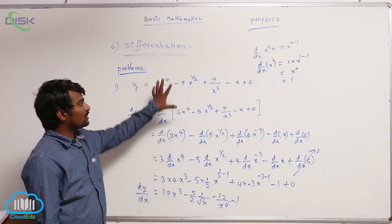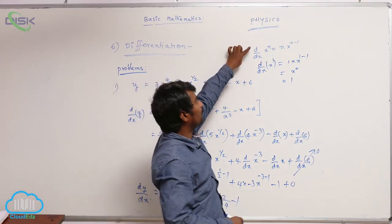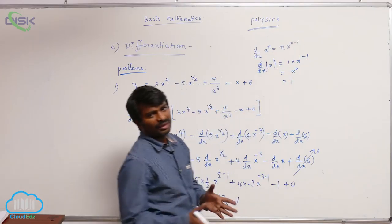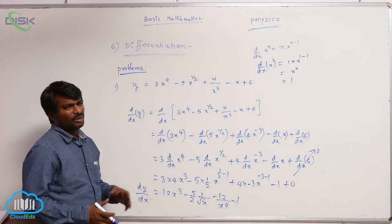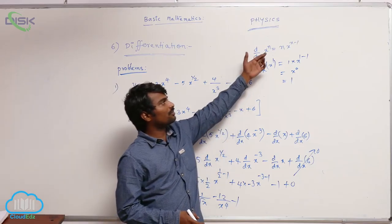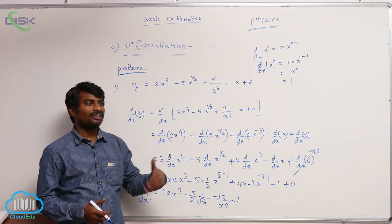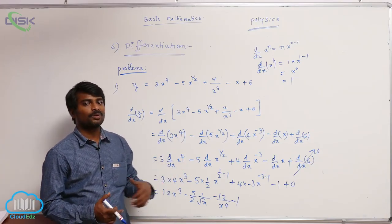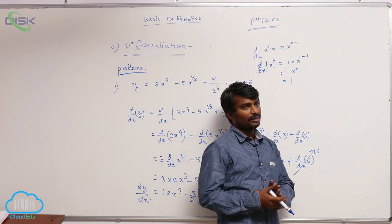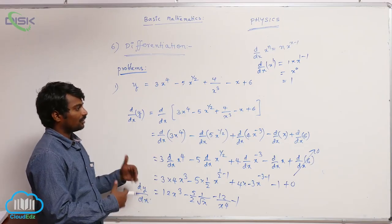I have done this problem by using only single formula: d/dx of x^n equals n times x^(n-1). In physics, most of the problems we are going to solve using this formula only. Of course, we have problems in terms of trigonometric functions, exponential functions, but many problems are only based on this formula. So you be perfect with this method, and practice some problems, again you solve it.